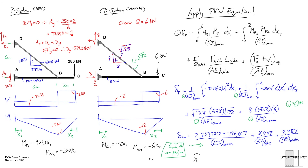Summing everything gives the final answer: 79.7 mm. A good exercise would be to calculate the percentage contribution from each source of deformation — for example, the axial deformation in beam segment A-B is likely less than 5–10% of the total. If you have time, work that out and post it in the comments below.